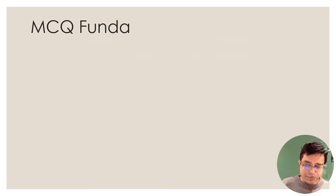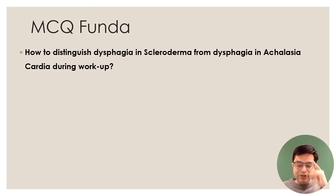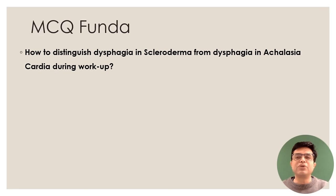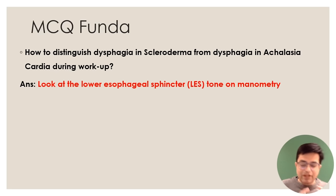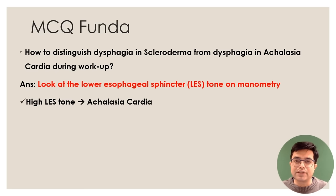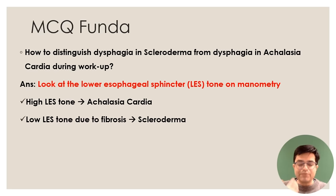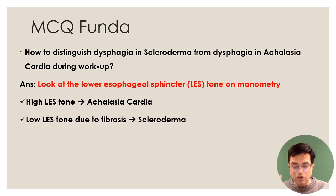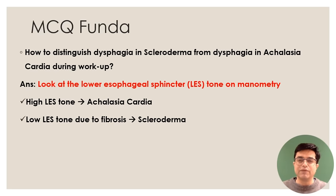MCQ point: a patient with dysphagia — how to distinguish scleroderma from achalasia cardia? On manometry, in achalasia cardia there is high lower esophageal sphincter tone because the sphincter does not relax. In scleroderma, due to fibrosis in the sphincter, there is low LES tone. So LES tone abnormality on manometry gives the clue whether dysphagia is due to scleroderma or achalasia cardia.